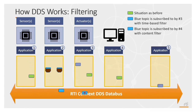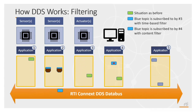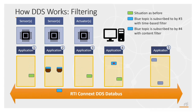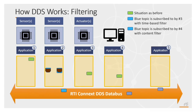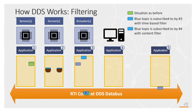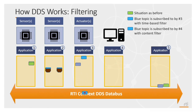Application 4 could be using some type of a content filter. Let's say it is an altimeter or a radar control, and it only wants to know if a data point is within a specific range, such as an altitude or a distance. Normally all this logic would have to exist in the application layer, but with RTI Connext you can move that logic into the communications layer and simplify your system as a whole, allowing you to focus on the application logic that matters to your system.